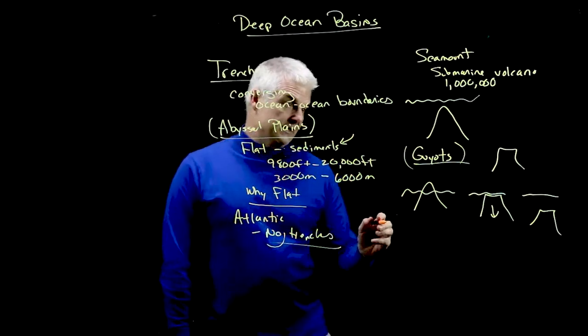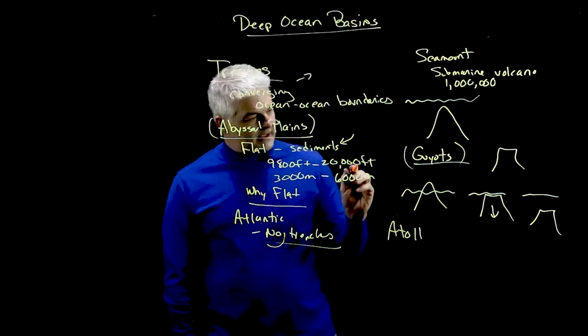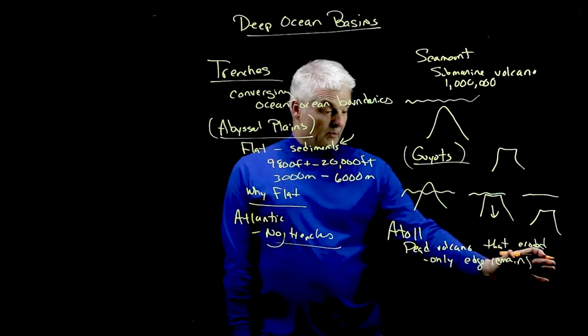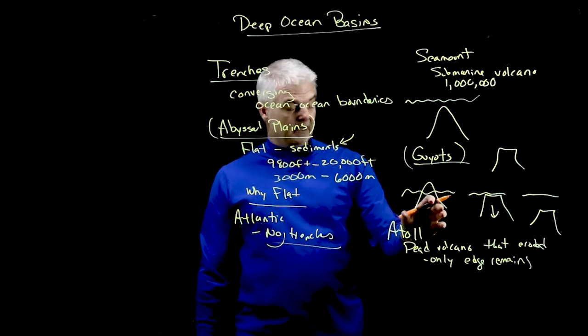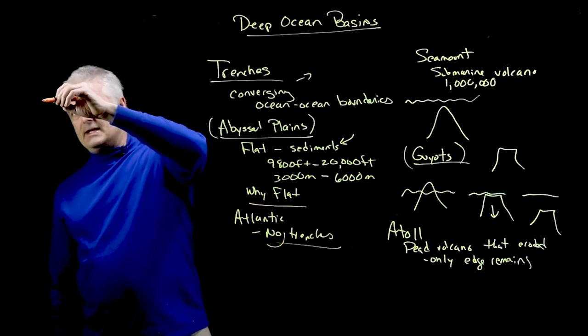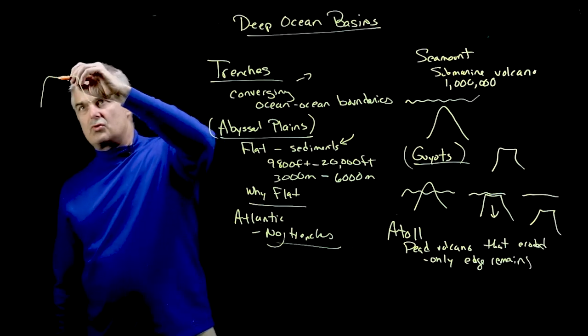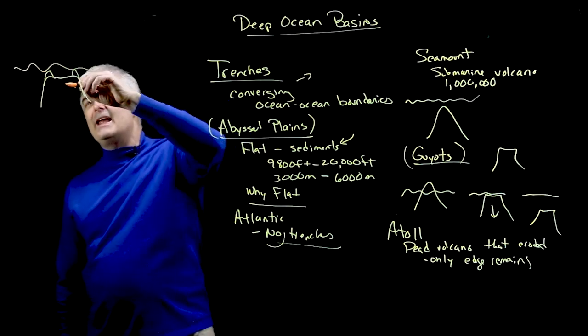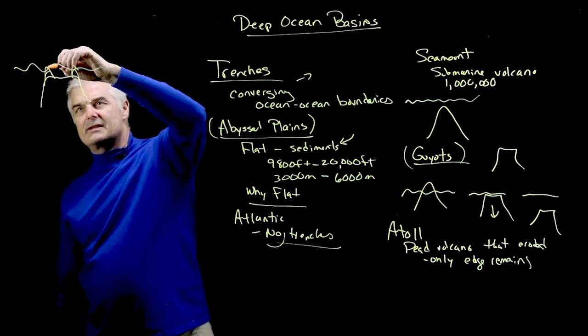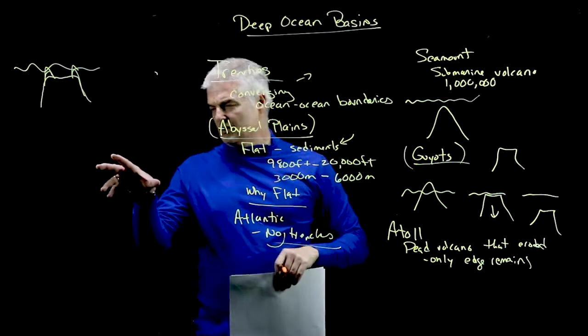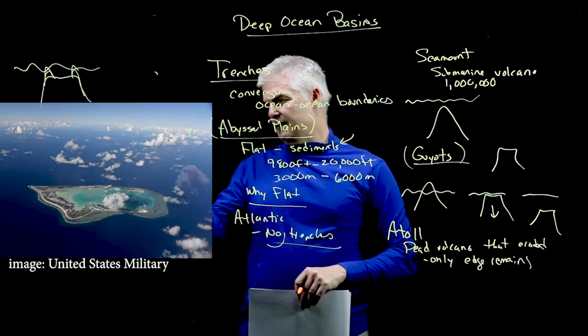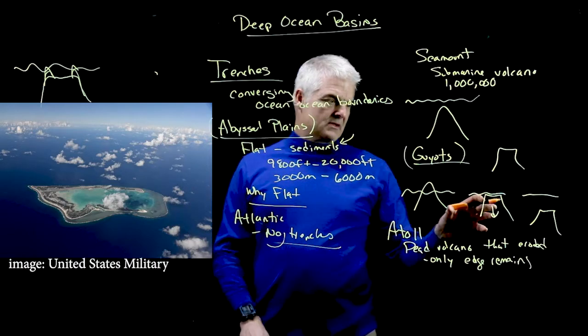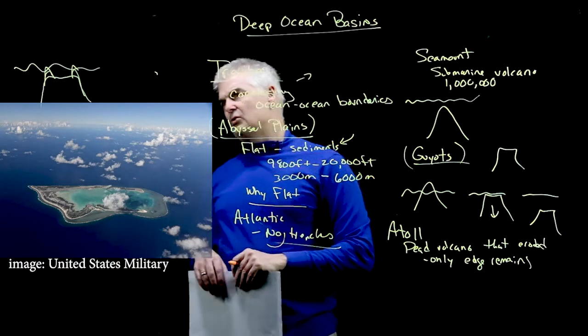I think the coolest one maybe is the atoll. This is a dead volcano that eroded and only the edge remains. It's actually a function of the guyout. What happens is you get the guyout here, but actually it's like a volcano that has a caldera. What's happened is you've got a little bit of the land. Take a look at this atoll. It's just a ring, a ring of a little bit of land. It's risen up because it's one of these guys over here.